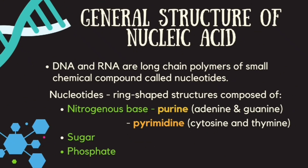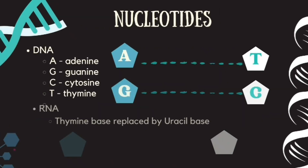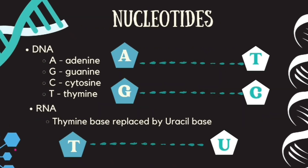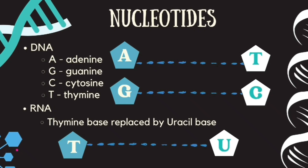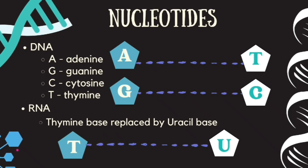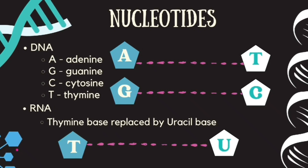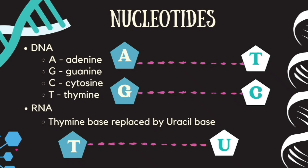DNA and RNA are long-chain polymers of small chemical compounds called nucleotides. Nucleotides are ring-shaped structures composed of hydrogen, sugar, and phosphate groups. In DNA, adenine is paired with thymine, while guanine is paired with cytosine. In RNA, the thymine base is replaced by uracil.